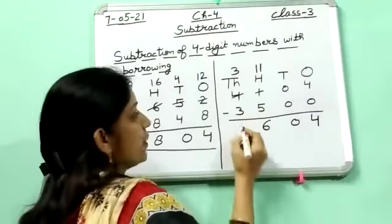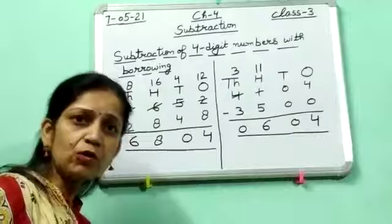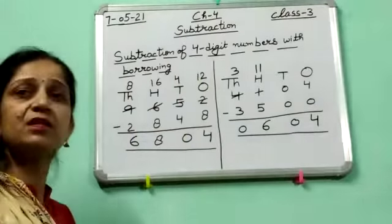Now here is 3. 3 minus 3 is 0. Understood all of you? In this way you have to do subtraction of 4-digit numbers with borrowing.